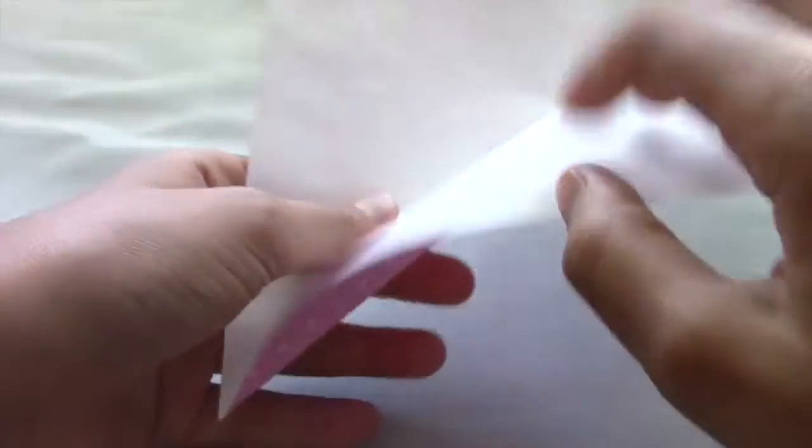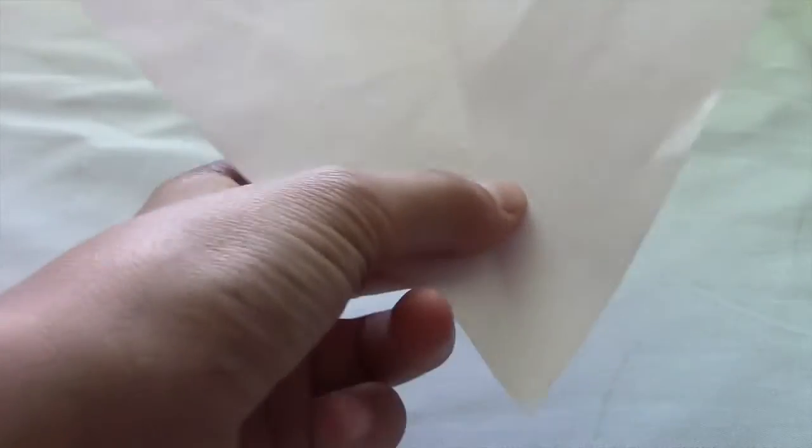Then you're going to cut down the middle. So we're just going to chop away. Now just take one of your triangles if you want to make one, or if you want to make two.